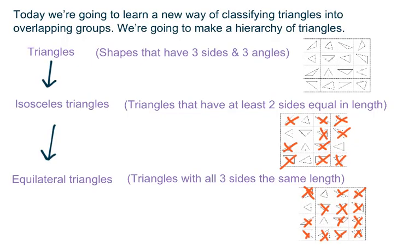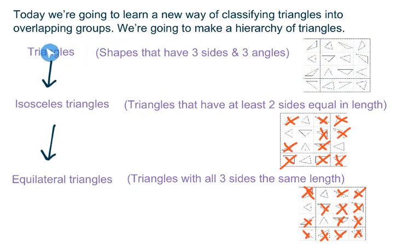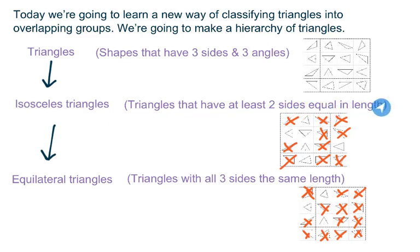Today we're going to learn a new way of classifying triangles into overlapping groups — we're going to make a hierarchy. The big category would be triangles: shapes that have three sides and three angles. All of those would fit into that overarching big group. Then I could break them down into a subcategory of isosceles triangles — triangles that have at least two sides equal in length.